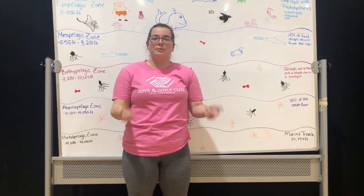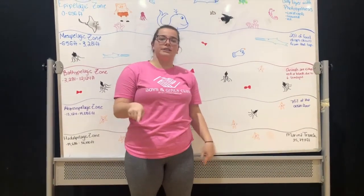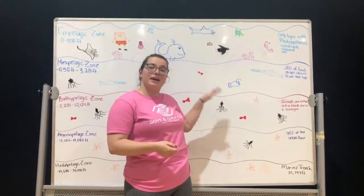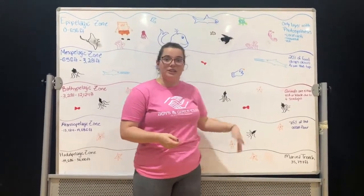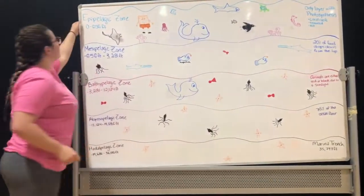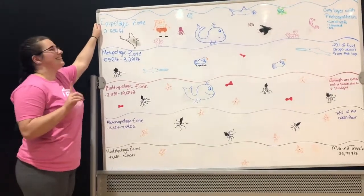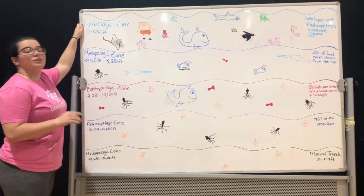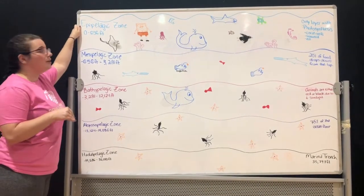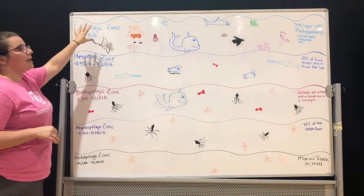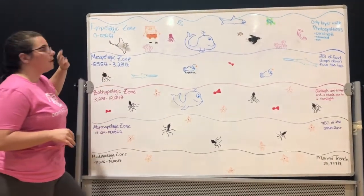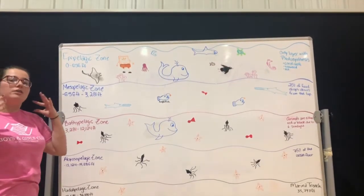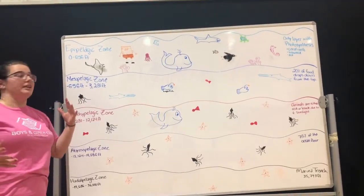Hi guys, it's Brooke from the Learning Center here at Joplin and real quick I'm gonna go over the different layers we have in our oceans. So our first layer is going to be the epipelagic zone, which is also known as the sunlight layer because this one has almost all the sunlight can reach into it, and so this has mostly all of the ocean animals you can think of.